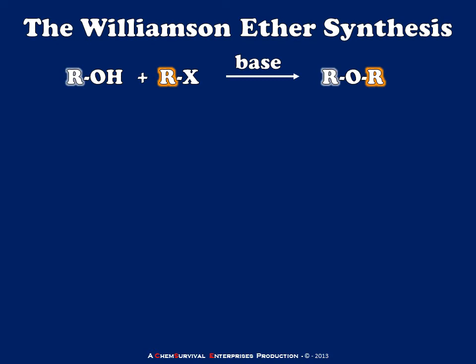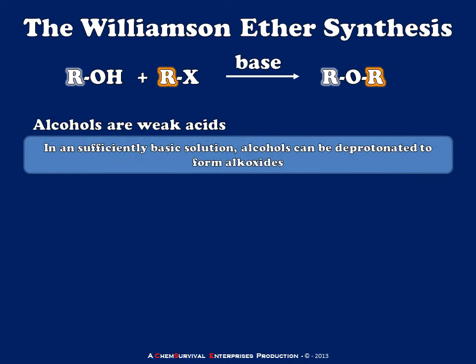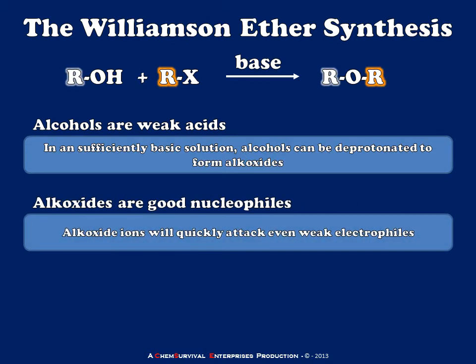Before we look at the Williamson Ether Synthesis itself, let's consider the two different reagents individually. Alcohols are weak acids, which means that in an adequately basic environment we can deprotonate them, removing that hydroxyl proton and creating something called an alkoxide. Alkoxide ions are pretty good nucleophiles, especially compared to their neutral alcohol counterparts. So when we create an alkoxide ion, we expect it to attack any electrophilic site that it can get to.